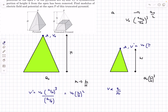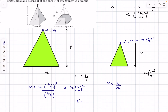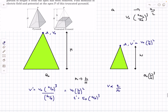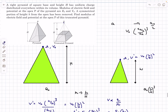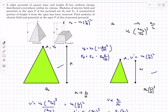The electric field varies linearly with dimensions: if we halve the pyramid height, the electric field halves, while the potential varies as the square. By superposition, the potential at apex P of the truncated pyramid is V₀ − V₀·(h/H)² = V₀·[1 − (h/H)²], and the electric field at P is E₀ − E₀·(h/H) = E₀·[1 − h/H]. These are the two final answers.